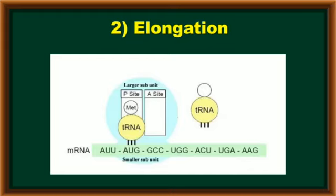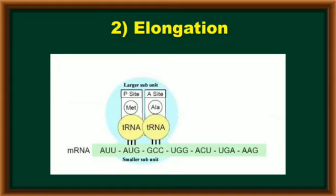Next, coming to the next step, elongation. When the process is initiated, the ribosomal complex moves from 5' to 3' direction. Immediately, the second genetic code, GCC, is read by one of the tRNA which has CGG as an anticodon. And GCC codes alanine. Now, this second amino acid, alanine, transfers on A-site.